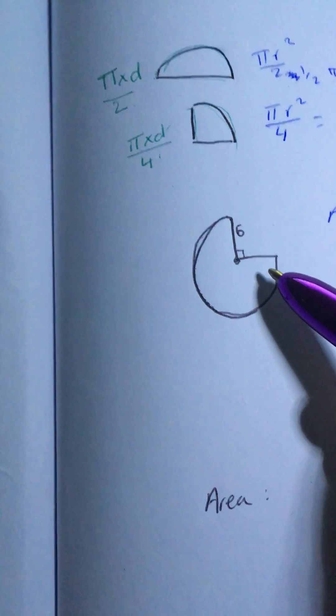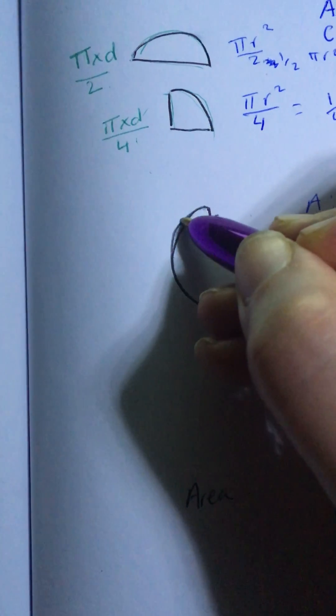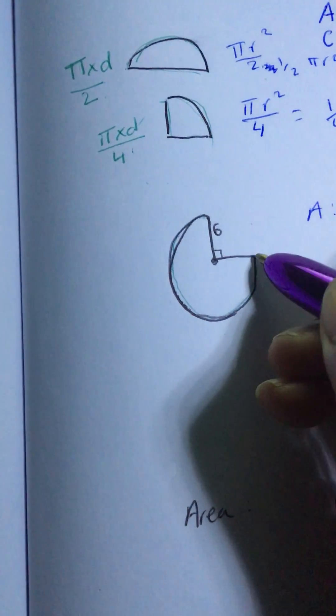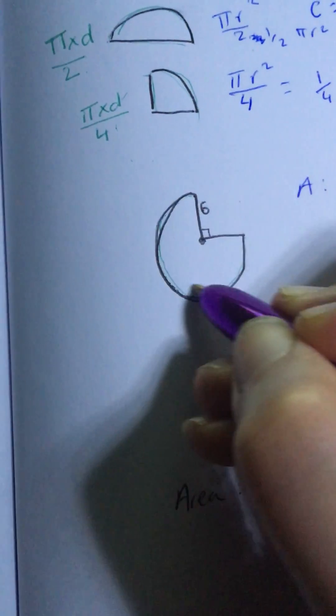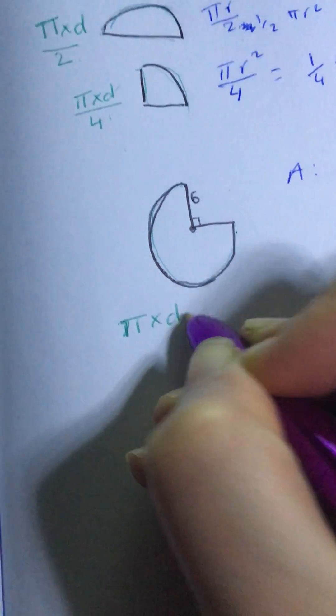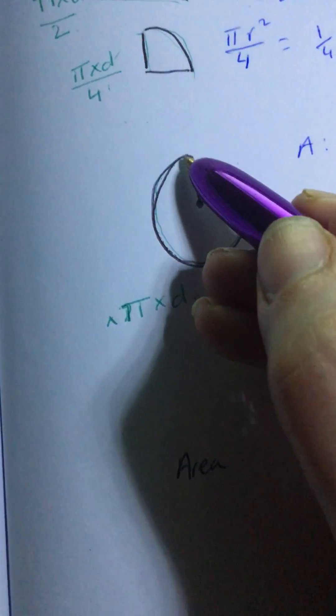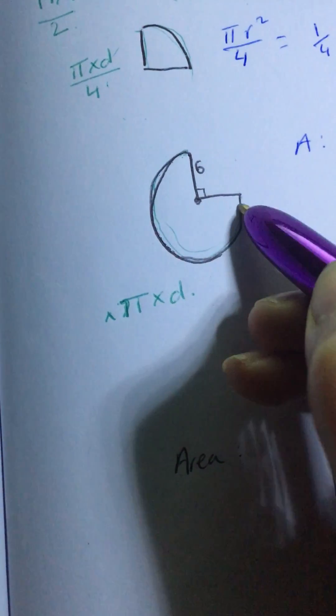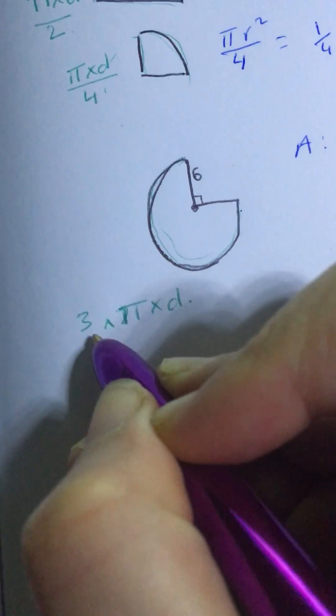So here, to find the perimeter of this shape, I begin by finding this curve. So to find that curve, I have to do π times d, and then I multiply by 3 quarters, because here I have 3 quarters of a circle. So it's times 3 over 4.